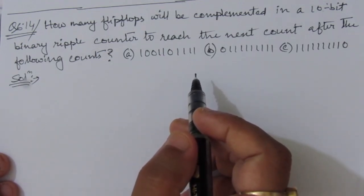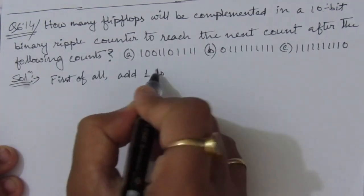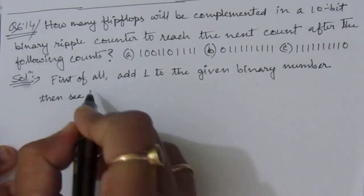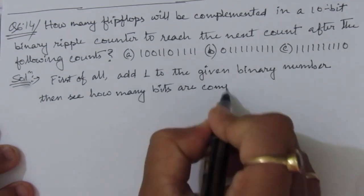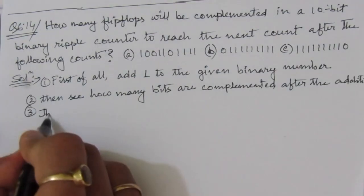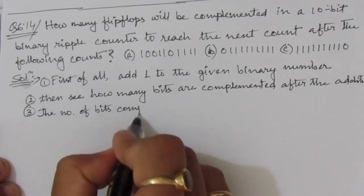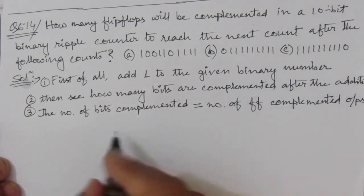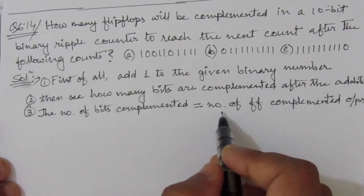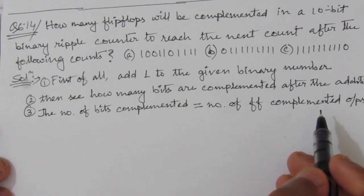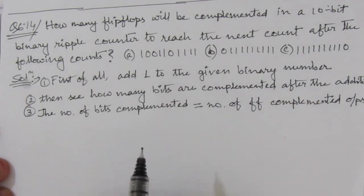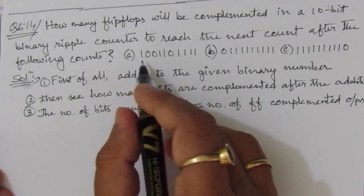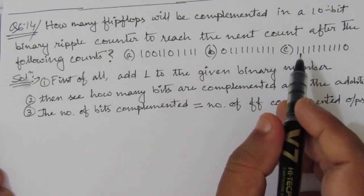First of all, add one to the given binary number. Then see how many bits are complemented after the addition. The number of bits complemented is equal to the number of flip flop complemented outputs. The number of bits complemented after the addition of one will be the number of flip flops that complement their output, because in a counter with each pulse the output will increase by one.